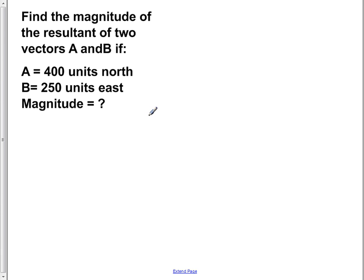Find the magnitude of the resultant of two vectors A and B if A equals 400 units north and B equals 250 units east. What is the magnitude of the resultant?